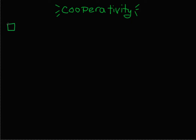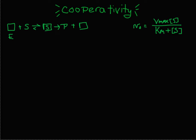Enzymes make reactions go faster. The enzyme, which I'm drawing as a square, binds substrate to form an enzyme-substrate complex that goes to products. We can describe this reaction with the Michaelis-Menten equation. And if we were to plot the velocity of the reaction at different amounts of substrate, we would see this hyperbolic plot. And this is what we would call non-cooperative.